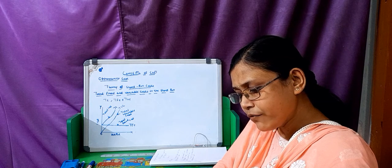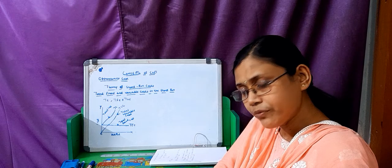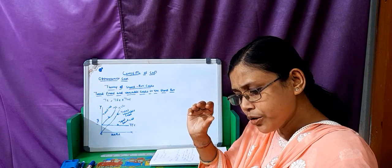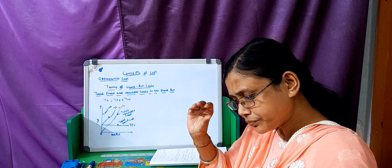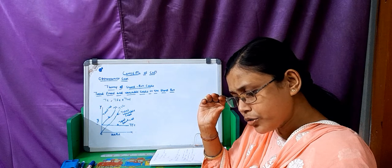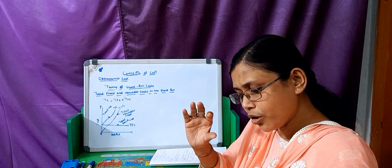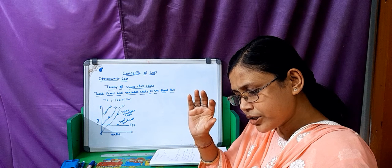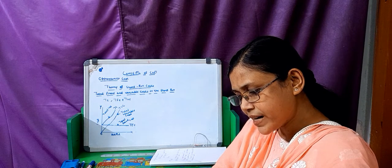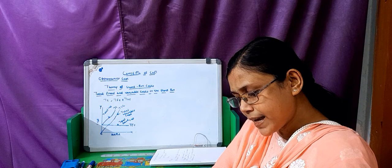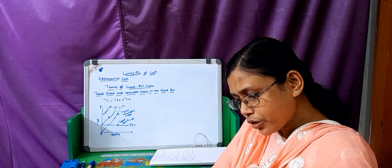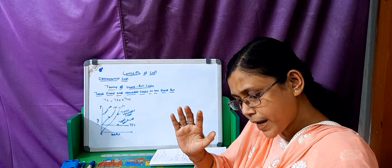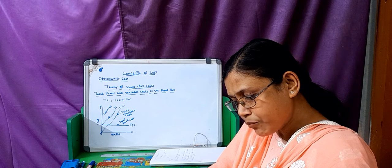Economists distinguish between the short run and the long run. The short run is a period of time in which output can be increased or decreased by changing only the amount of variable factors such as labour, raw materials, chemicals, etc. In the short run, quantities of fixed factors such as capital equipment, factory building, etc. cannot be varied for making a change in output. On the other hand, the long run is defined as the period of time in which the quantities of all factors may be varied.